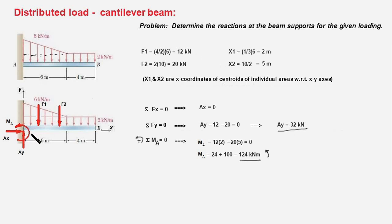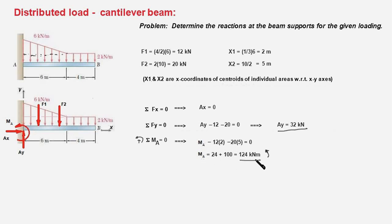The sum of all moments about A equals zero. We already have moment MA, and forces F1 and F2 cause clockwise moments, so they carry negative signs. MA − F1 times 2 − F2 times 5 = 0, giving MA − 24 − 100 = 0, so MA = 124 kN·m. The reaction at A consists of a vertical force AY = 32 kN and a counterclockwise moment of 124 kN·m.